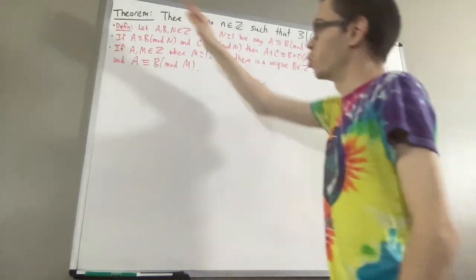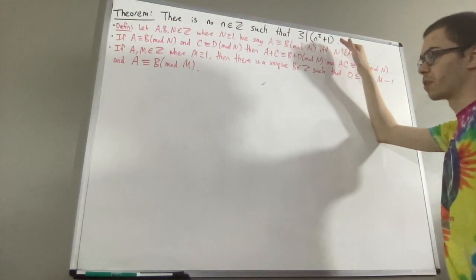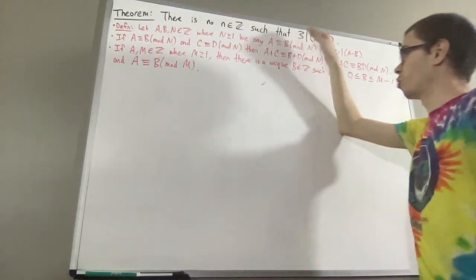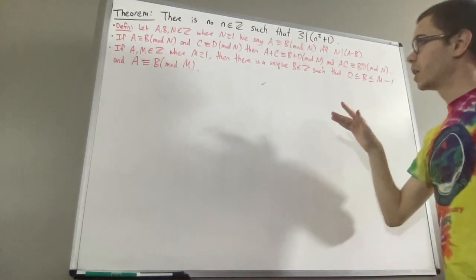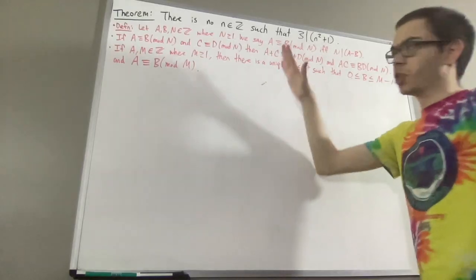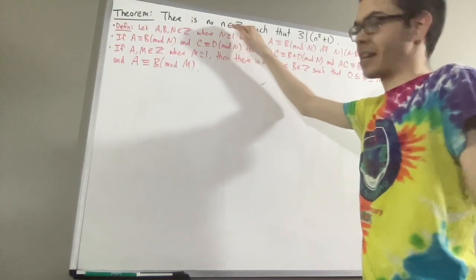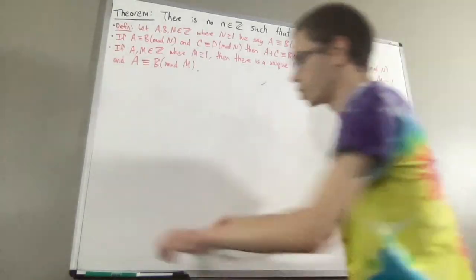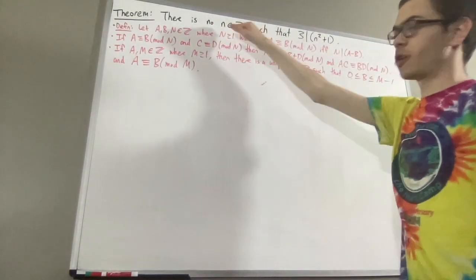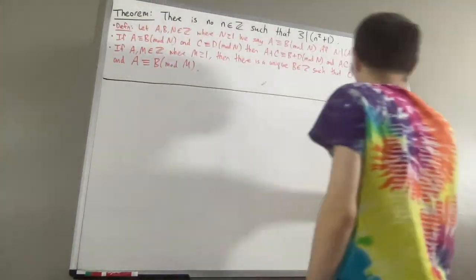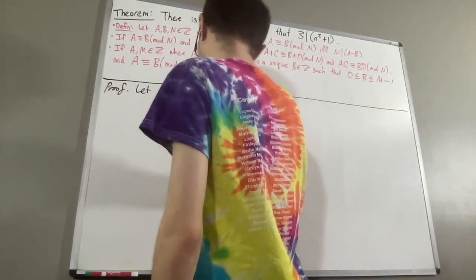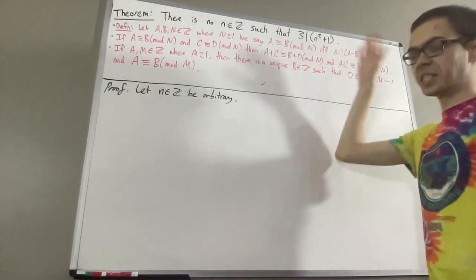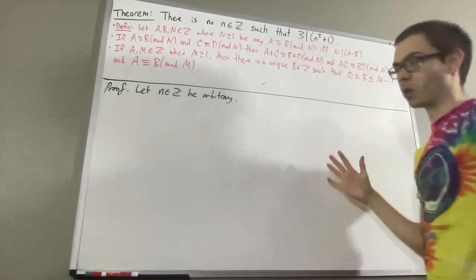So now let's get into proving this theorem. We're trying to prove there is no integer n such that 3 divides n squared plus 1. To prove that, we are going to prove for every integer n, 3 does not divide n squared plus 1. To start on the proof, we will give ourselves an arbitrary integer n, and from here we proceed to show 3 does not divide n squared plus 1.